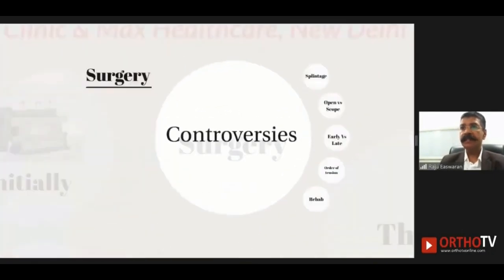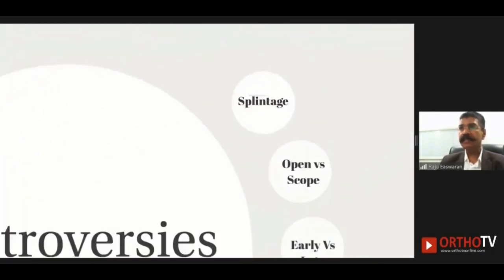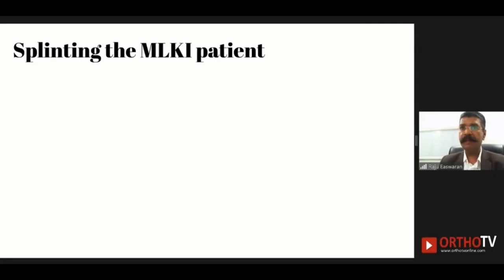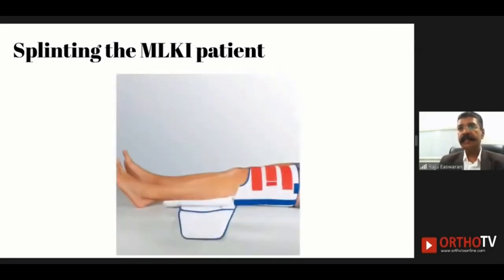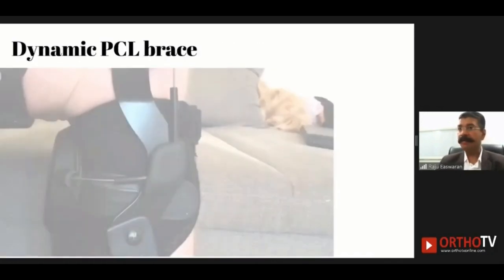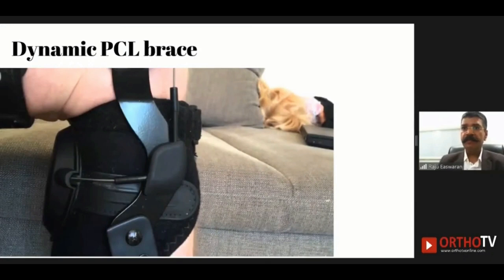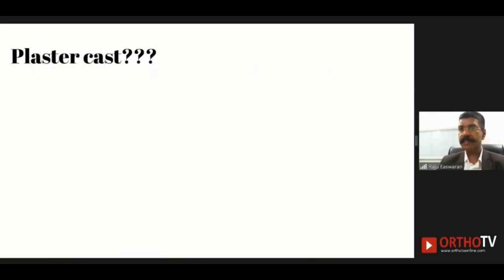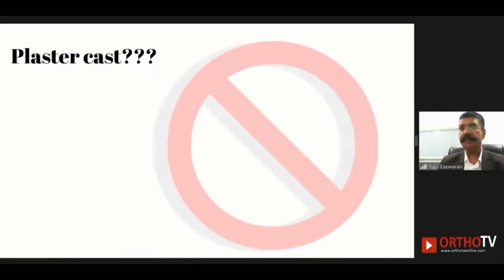When it comes to surgical controversies, splinting the multi-ligament injured knee is best done with a small posterior pad beneath the upper calf so the tibia can be translated anteriorly to maintain the normal tibiofemoral step-off. A better, though more expensive, option is to use a dynamic PCL brace — I'll present a case demonstrating the successful use of this brace if time permits.